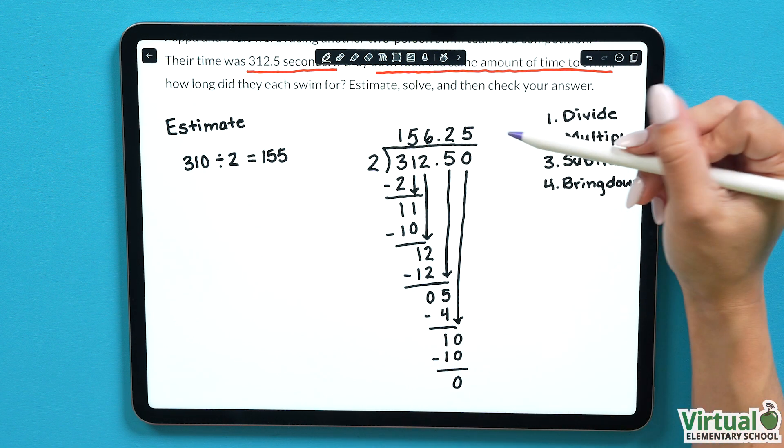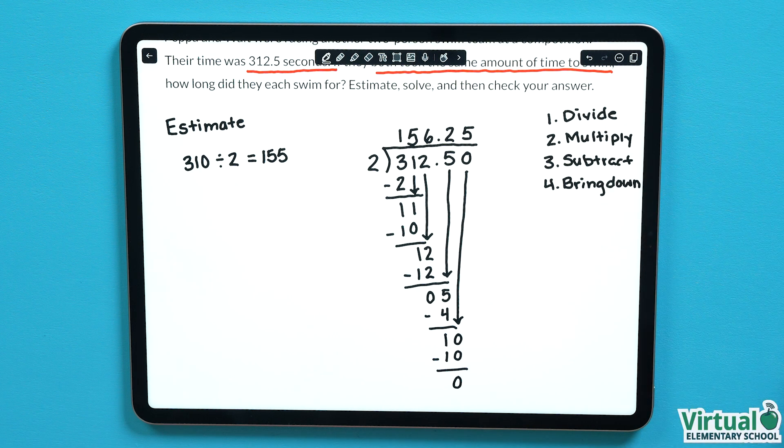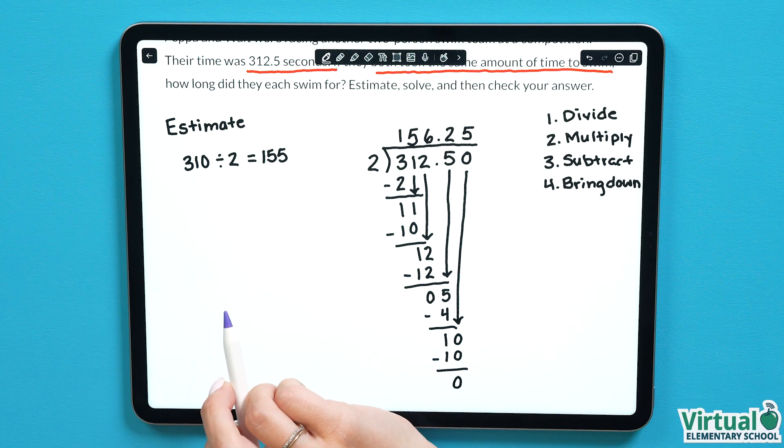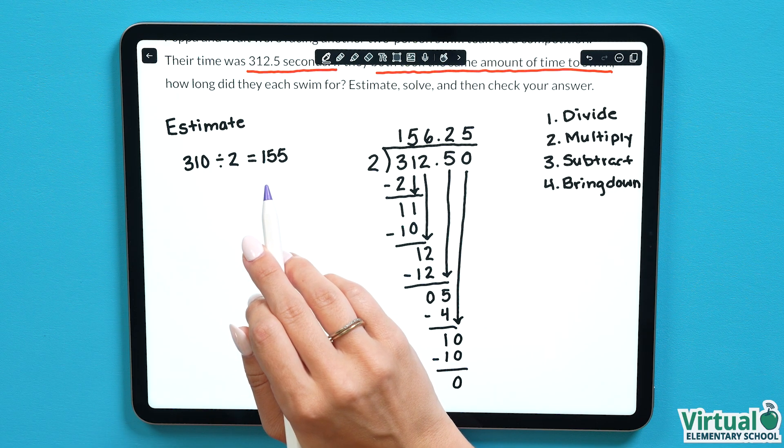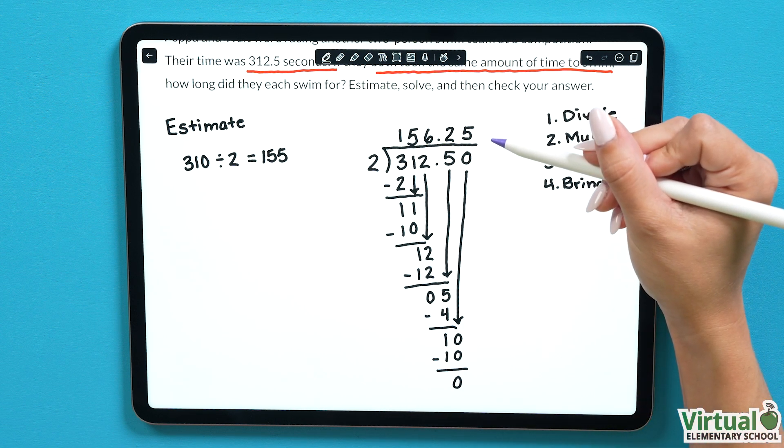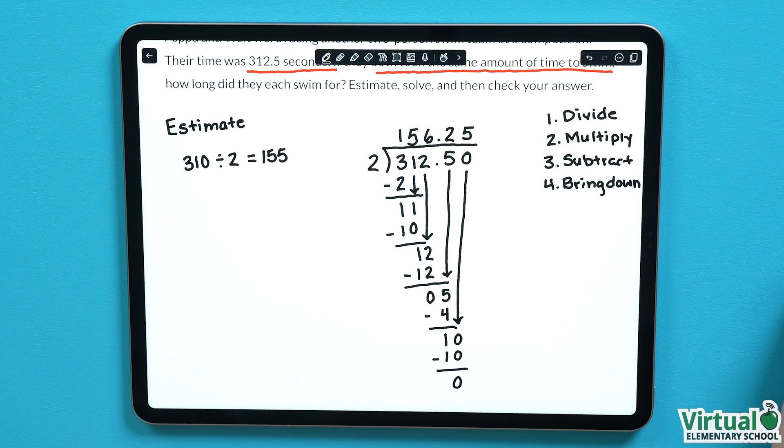Now we have no remainder and we have a complete new answer at the top. The answer is 156.25. Now let's check by comparing our answer to the estimate we did in the beginning. Our estimate was 155, and the actual answer we got was 156.25. These two values are pretty close, so we can assume that our answer is correct.